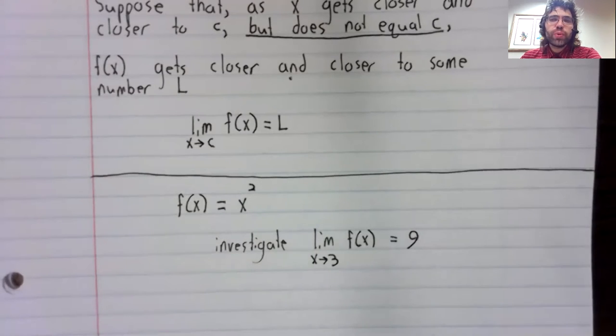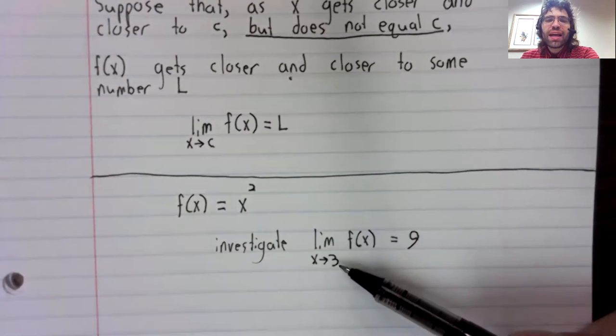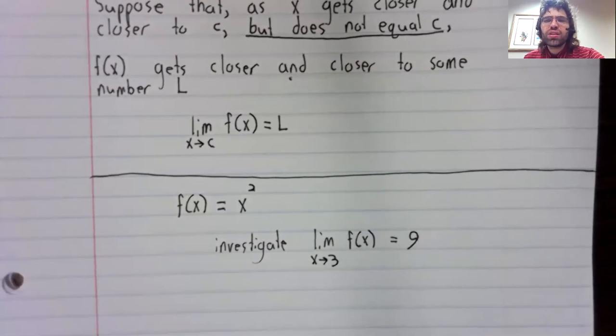In most situations, when we take a limit, f of that number won't even exist, like you saw that with instantaneous rates of change. We let h get closer and closer to zero, but h couldn't actually equal zero, because it would give us a division by zero error.